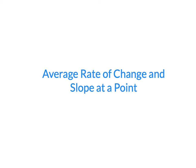Now that we've wrapped up our discussion of limits, we're ready to take some baby steps toward derivatives. We usually start by talking about average rate of change and slope at a point. Slope at a point could also be considered instantaneous rate of change.